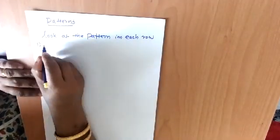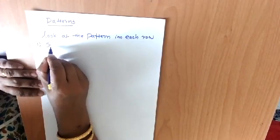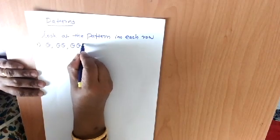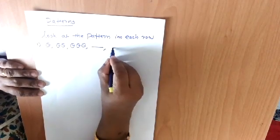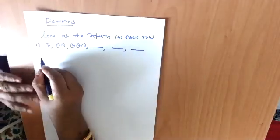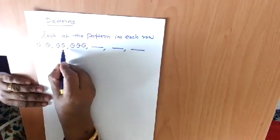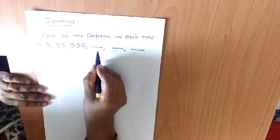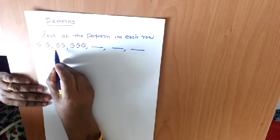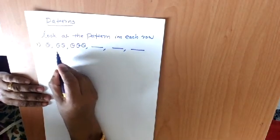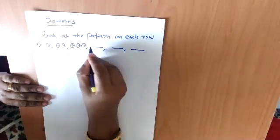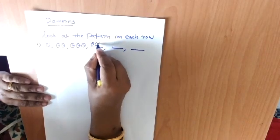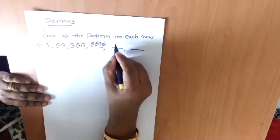Number one. Here first one board, then two boards, three boards. What will come next? Here the numbers are increasing by one. The next one — how many boards? Four boards. Then five boards. Then six boards.